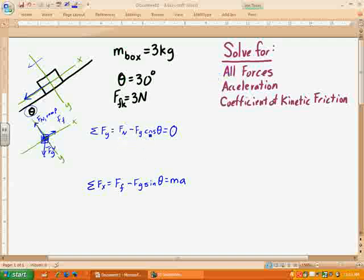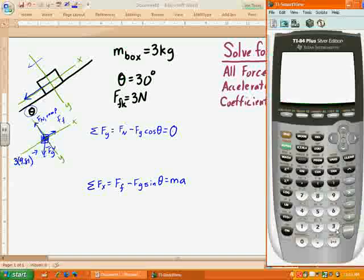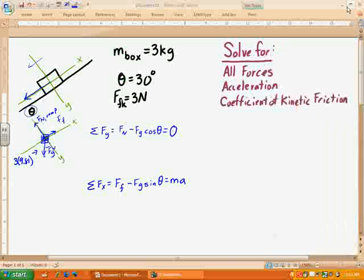So first let's go for the force of gravity. Because the force of gravity is always easy. It's just the mass, which is 3 times 9.81. So we'll go 3 times 9.81, which is 29.3. So the force of gravity is 29.43.